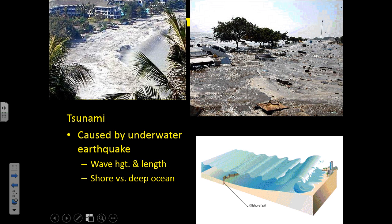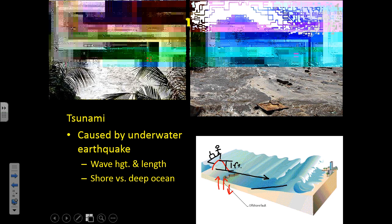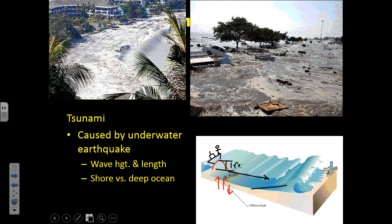Tsunamis happen when underground, there's a break in the rocks where one side is moving up and one side is moving down, and that causes a reaction in the ocean. However, in the middle of the ocean, if you were on a ship and a tsunami happened, you probably wouldn't even notice it because the wave height is only about one foot. It may have a wavelength equal to 500 miles, so the person on the ship is not going to notice anything.